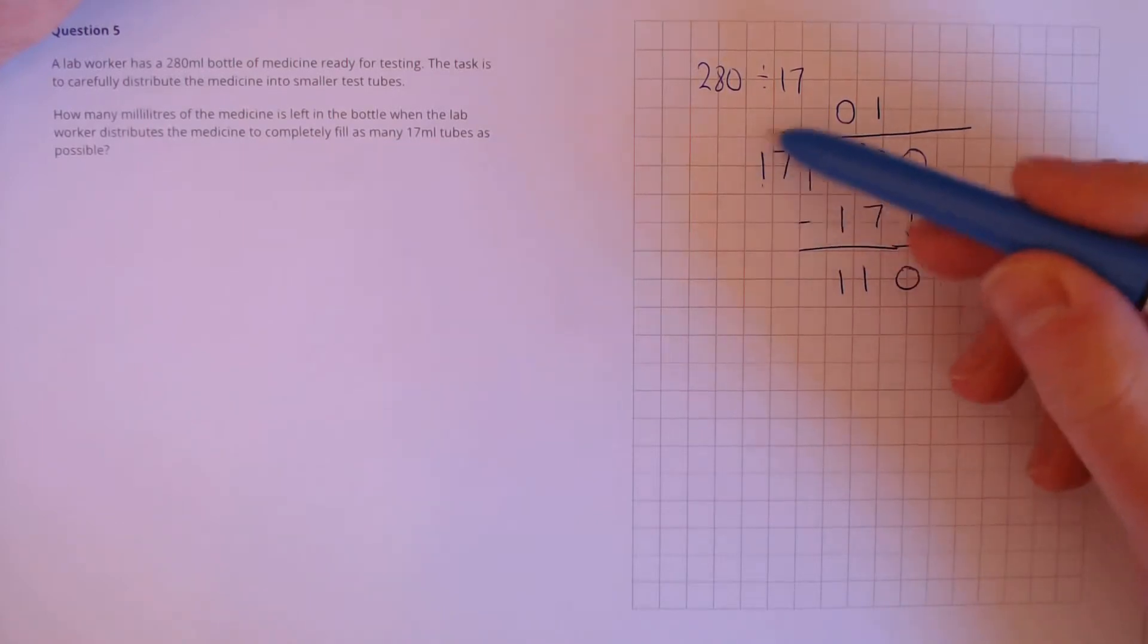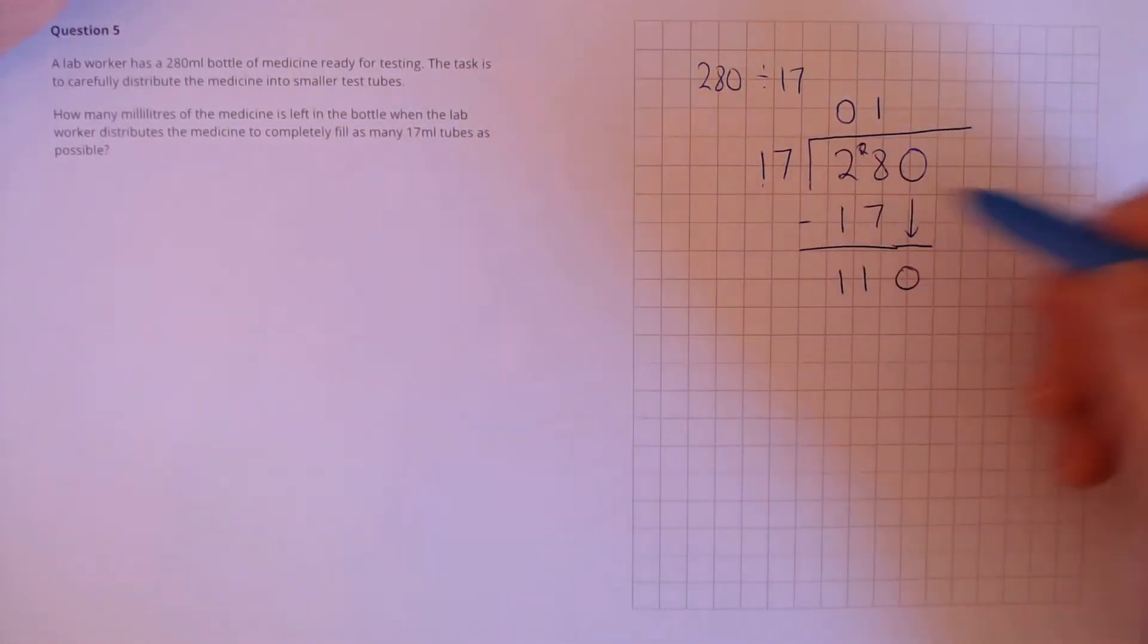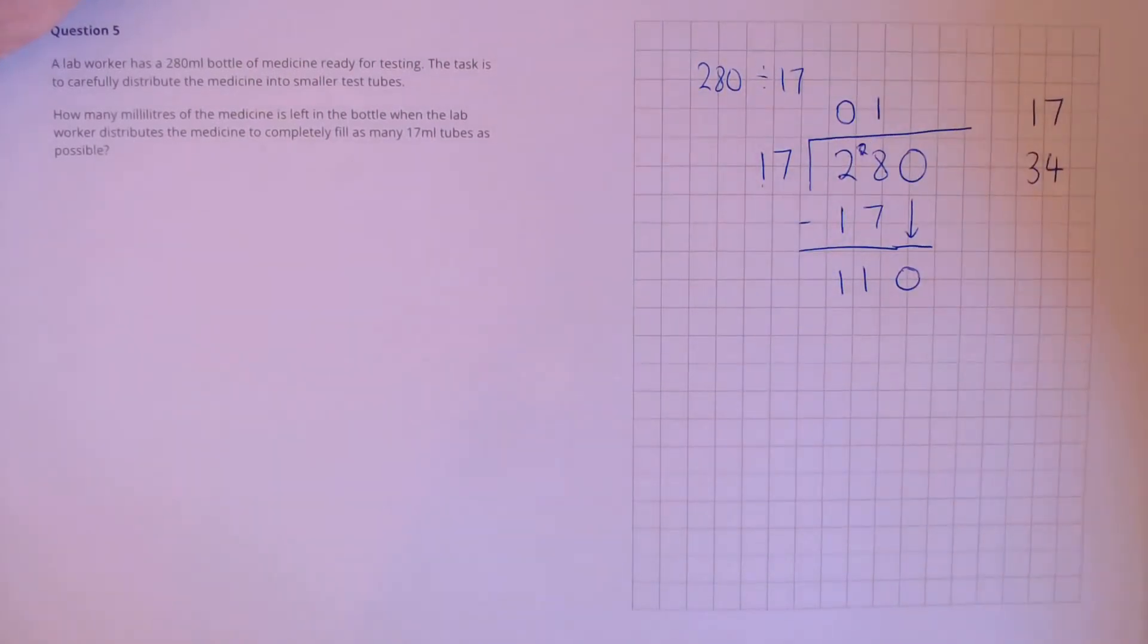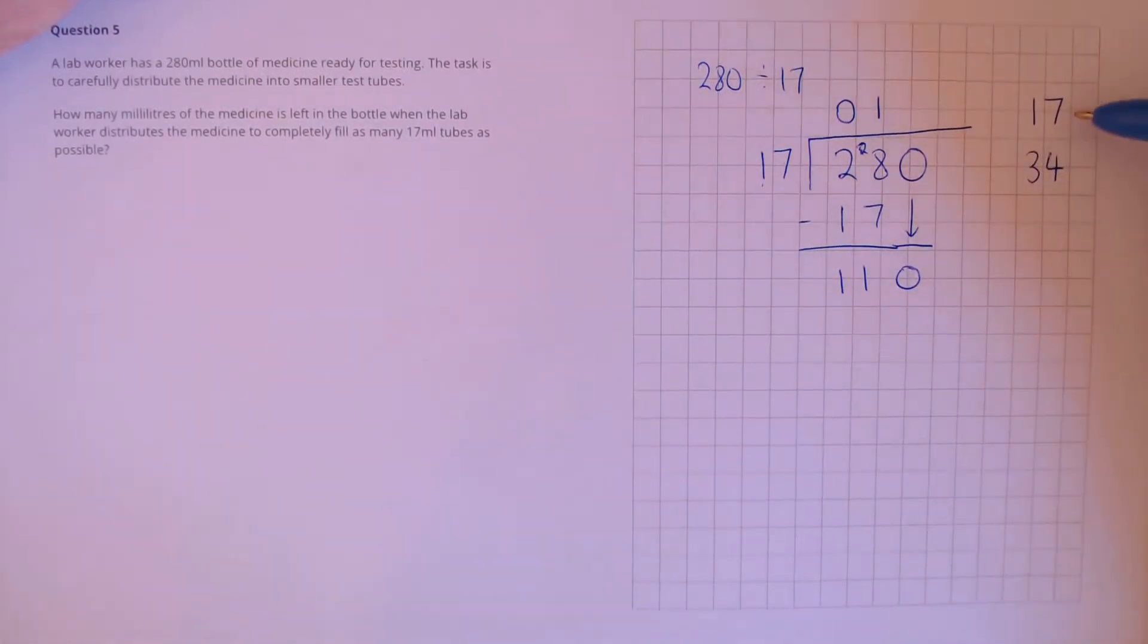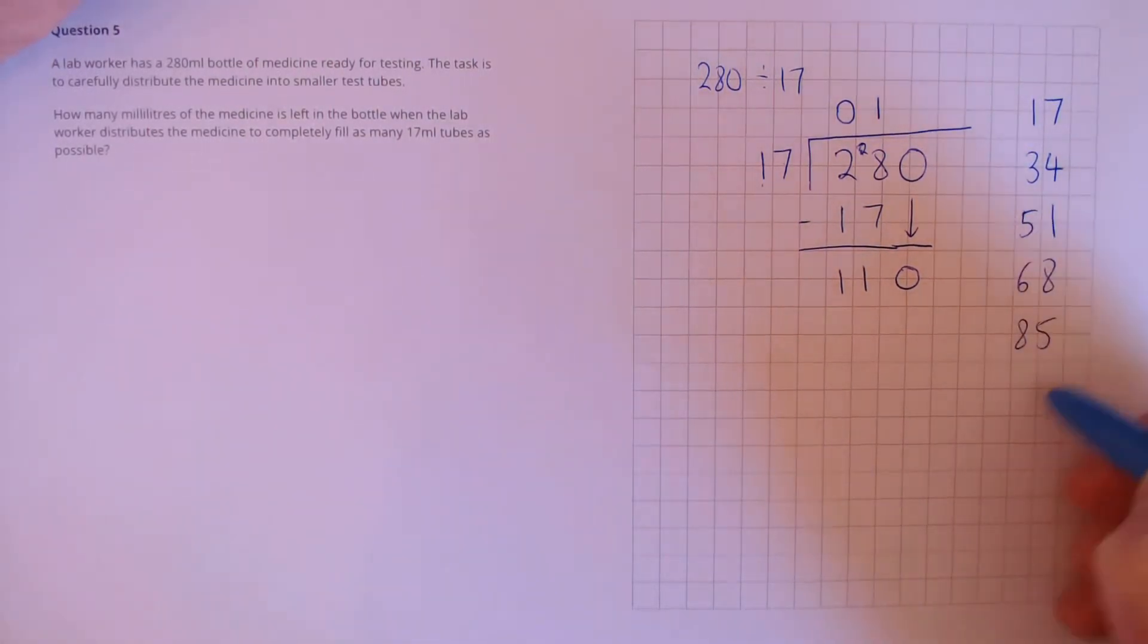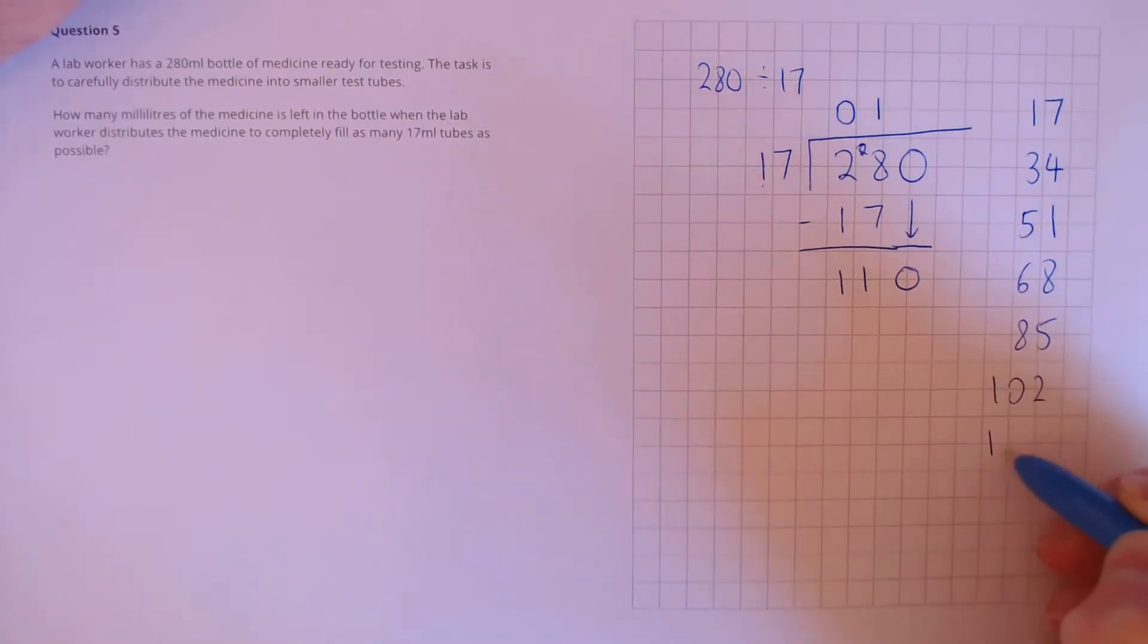In these cases where we've got a number where we don't know the times table easily, it's useful to write out the first few of the times table simply by doing addition. This is 17 times 1, 17 times 2, times 3, times 4, times 5, 6 and 7.